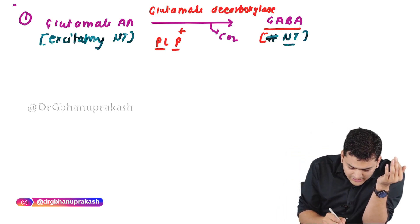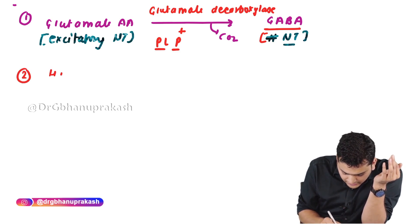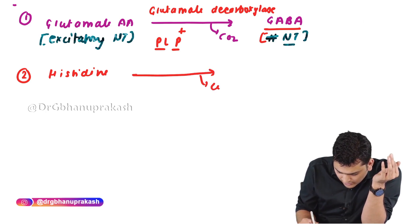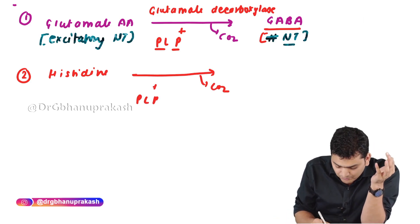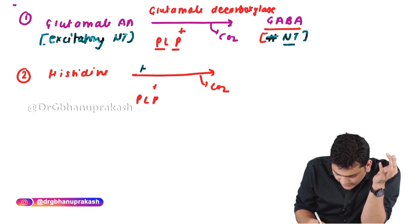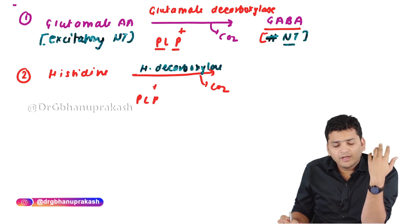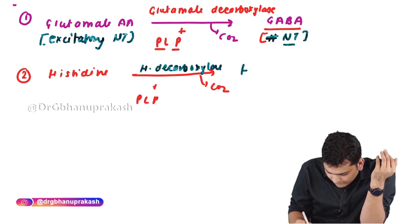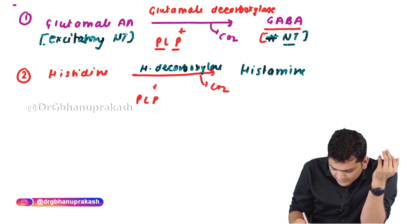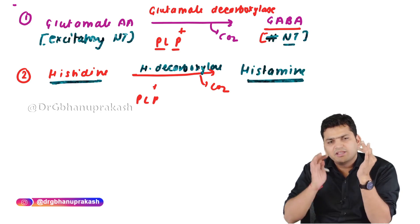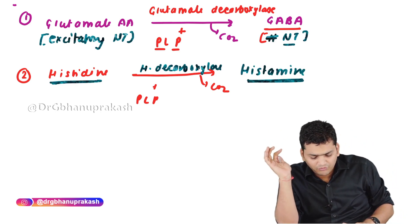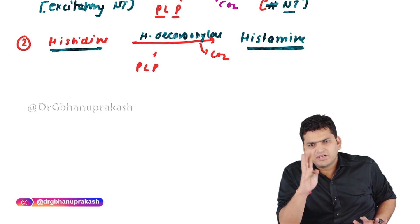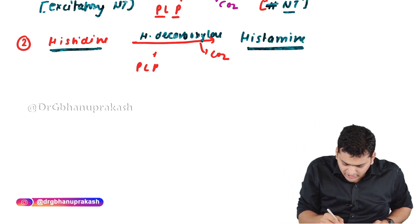The second example has been asked in the exam. If you take histidine and do the decarboxylation reaction — removing carbon dioxide — you will require PLP and histidine decarboxylase. The molecule you get is histamine. The question asked was: when histidine converts into histamine, what is the name of the reaction? The answer is decarboxylation.